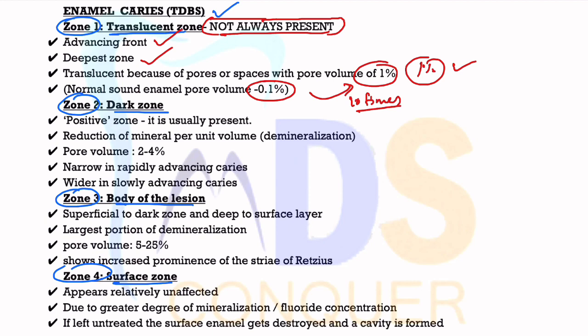The second zone is called the Dark Zone. It is always called a positive zone and is usually present. It is due to the reduction of minerals per unit volume, as demineralization occurs here. Caries is essentially a shift of the demineralization-remineralization cycle towards demineralization. The pore size in the Dark Zone is 2 to 4%. In rapid advancing caries, this zone will be narrow, whereas in slow advancing caries, it will be wider.